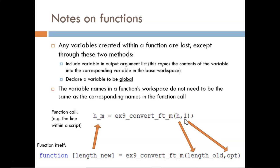The idea is that it is not variables being transferred, but instead values being copied. Similarly, the output argument within the function is called length_new, which is being copied over to the base workspace variable named hm.